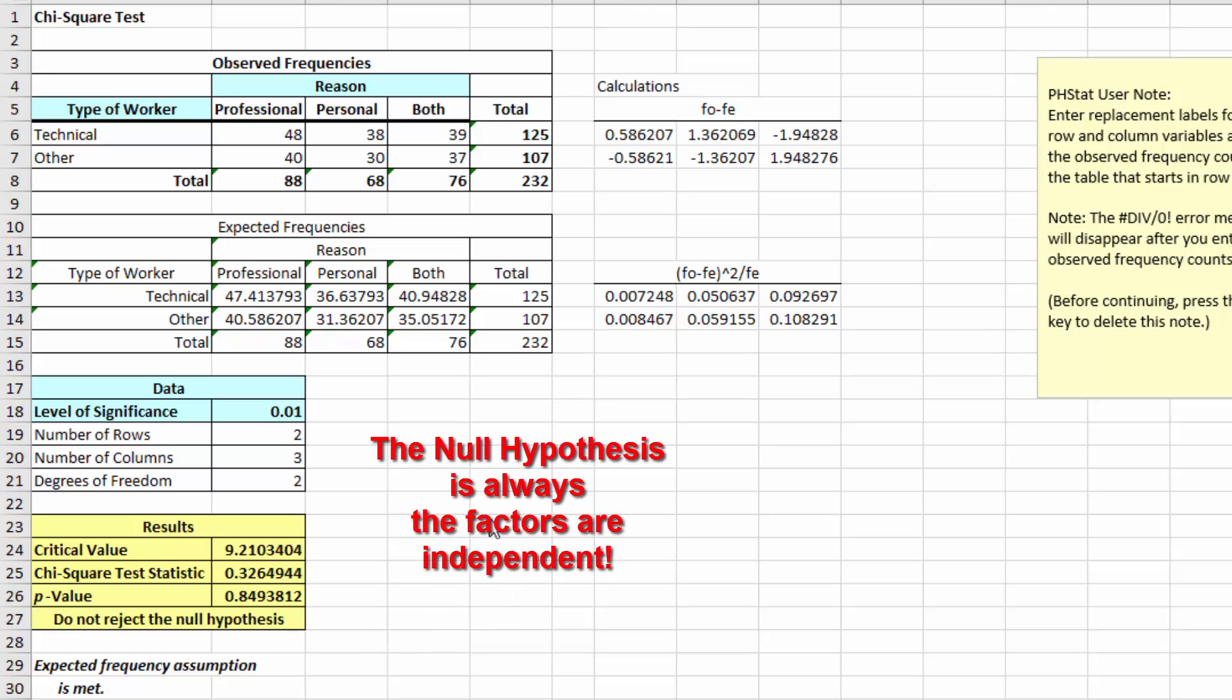Remember, when we're doing the chi-square test for independence, the null hypothesis is always that the factors are independent. In this case, the reason for getting the education and the type of job they do are not related, they're not dependent upon one or the other.